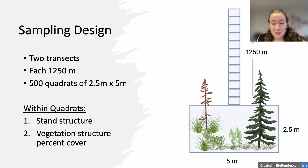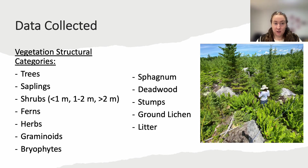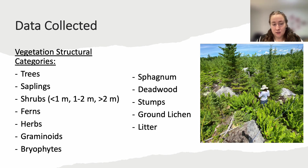This information is used later to assign pseudospecies. Similarly, we assigned a percent cover to 14 categories of vegetation structure, which are used as pseudospecies for analysis. These 14 categories were: trees (DBH above 5 cm), saplings (DBH below 5 cm), three shrub height classes (less than 1 m, 1–2 m, and above 2 m), ferns, herbs, graminoids, bryophytes, sphagnum, deadwood, stumps, ground lichen, and litter. Each category was assigned a percent cover per quadrat for use as a pseudospecies in analysis.